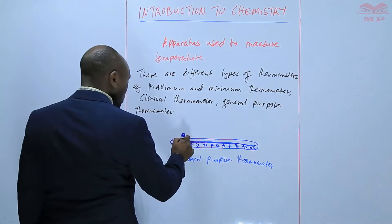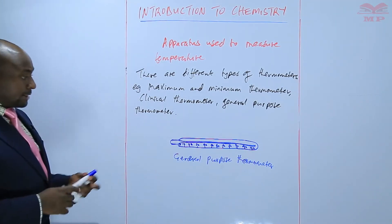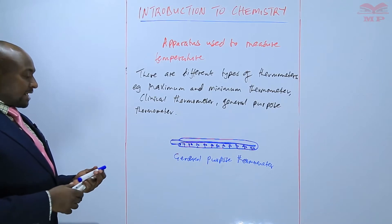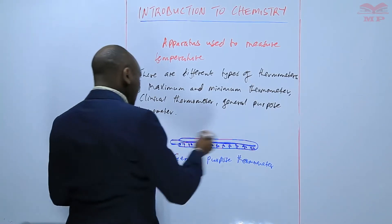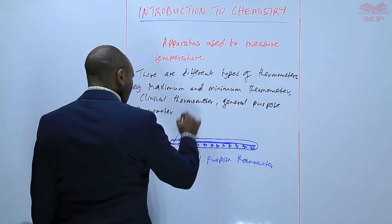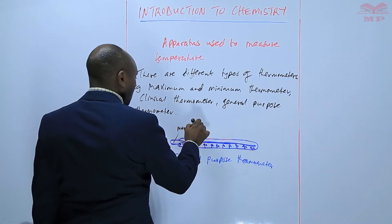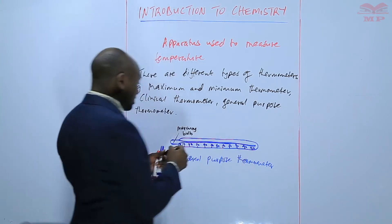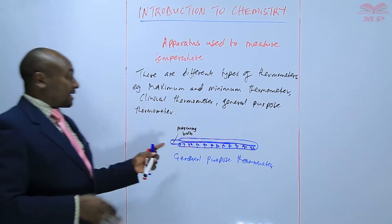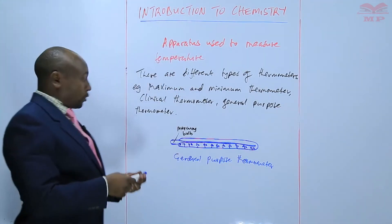Most reactions take place at a temperature within the range of zero to 110 degrees Celsius. In the case of a mercury thermometer, the liquid-containing part is referred to as the mercury bulb. Basically, the thermometer can either be made of mercury or alcohol.